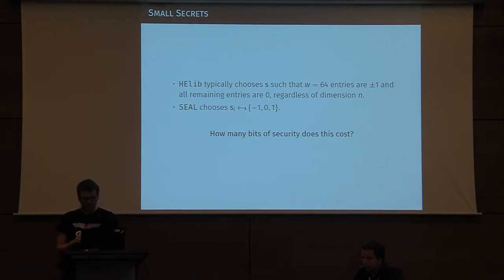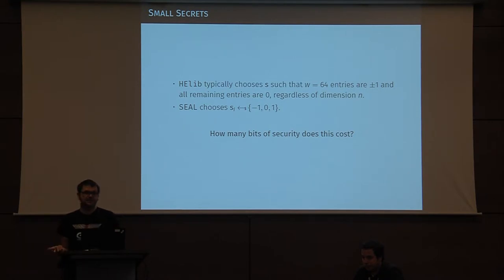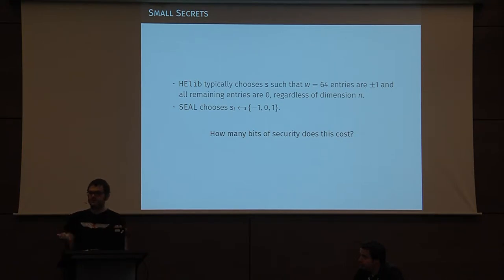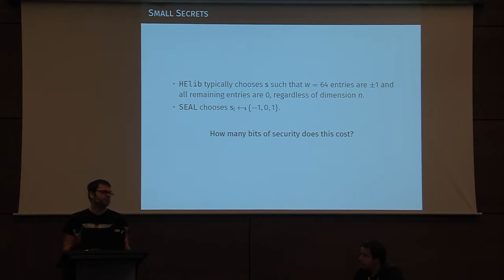SEAL in contrast picks the secret uniformly at random from the set {minus one, zero, one}, so it's not sparse but it's short. The natural question to ask at this point is: how much security does this cost? We have the LWE problem, we have some understanding of how hard it is to solve, and here we have a variant of it — so does it cost any security or not?